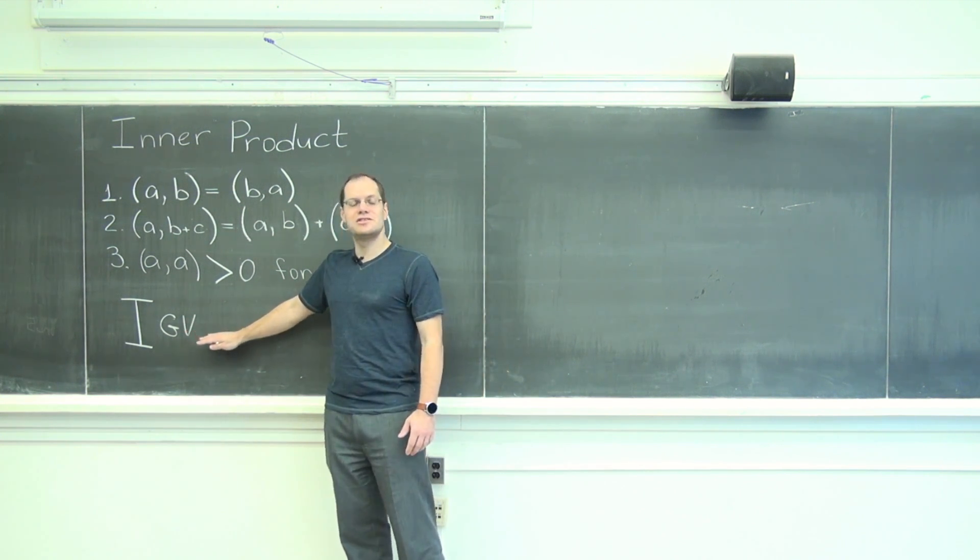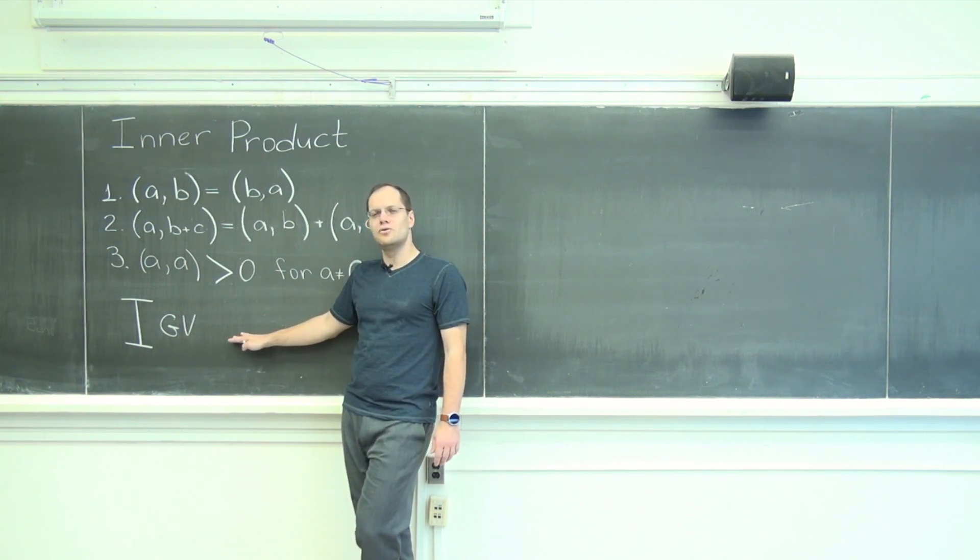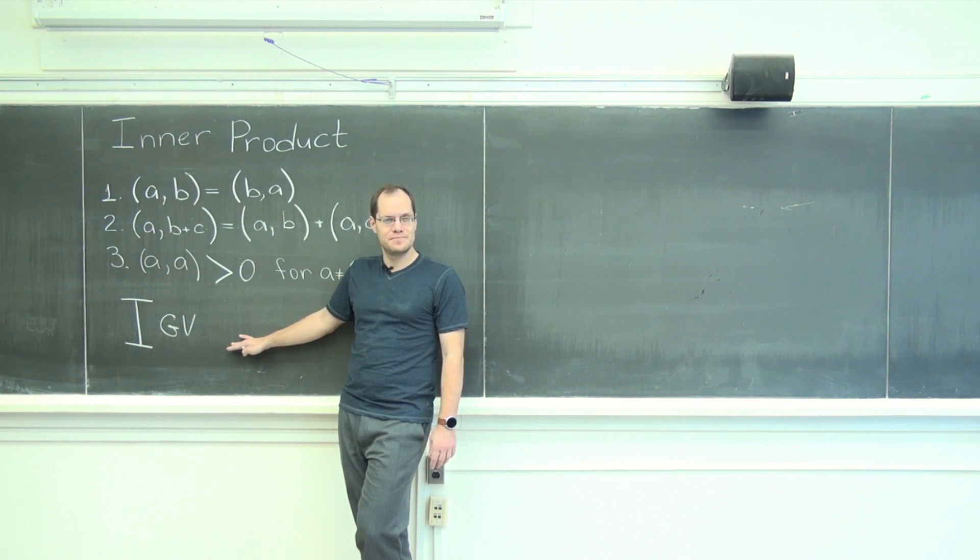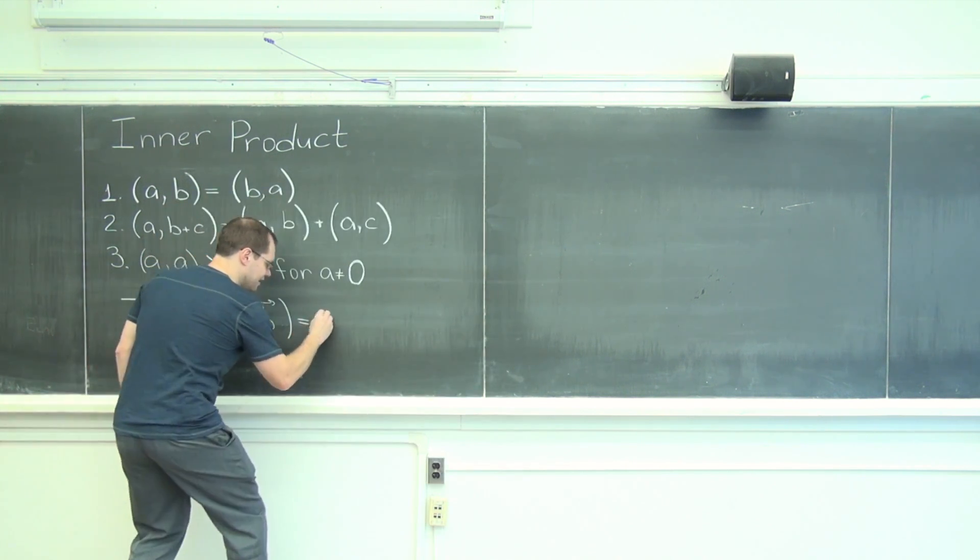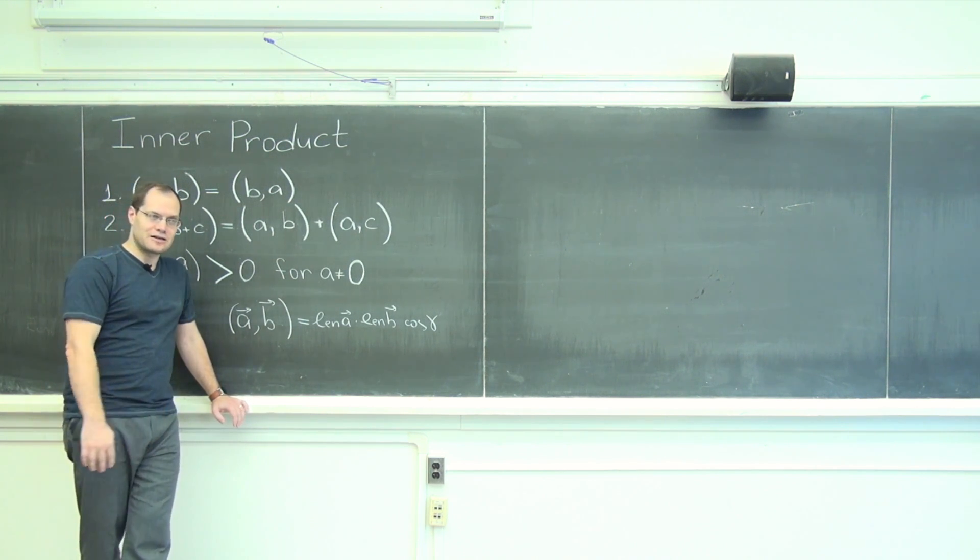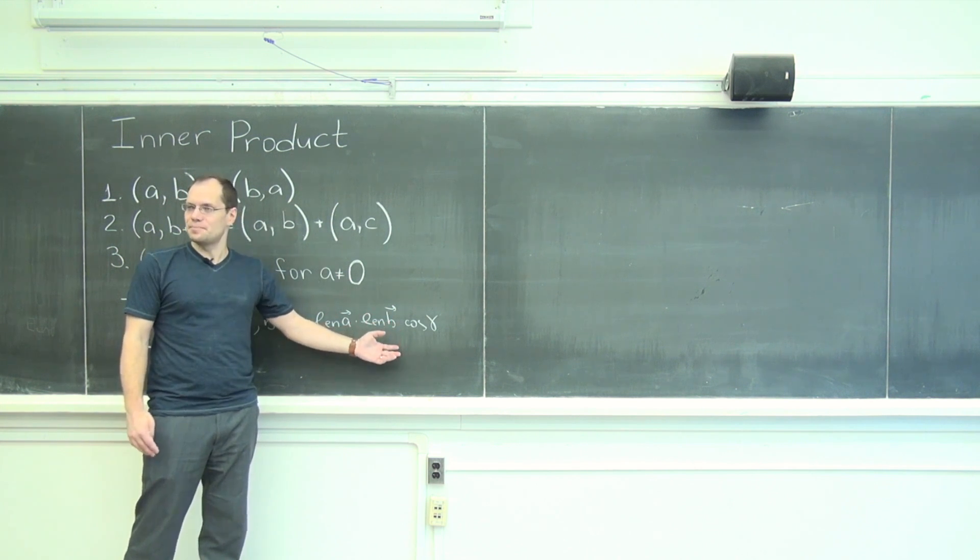So let's just dismiss geometric vectors. When it comes to geometric vectors, there is really only one reasonable definition of the inner product. And it's the length of one times the length of the other times the cosine of the angle between them. Okay, so it used to be the dot product.